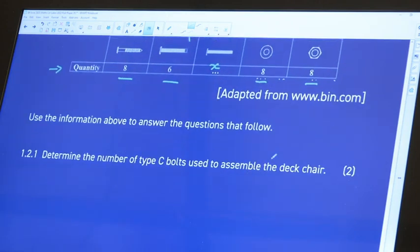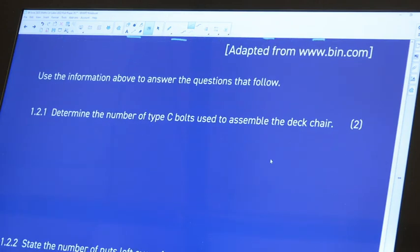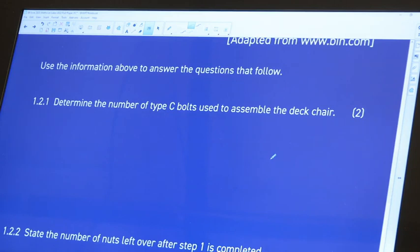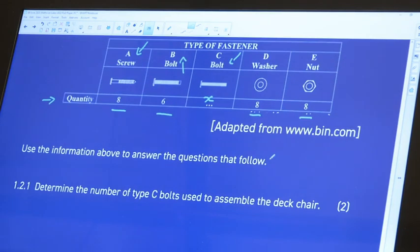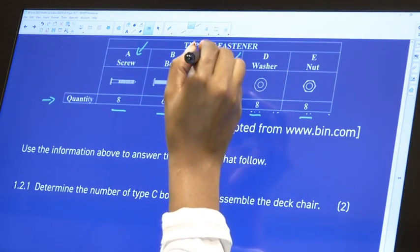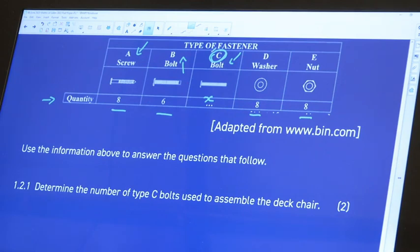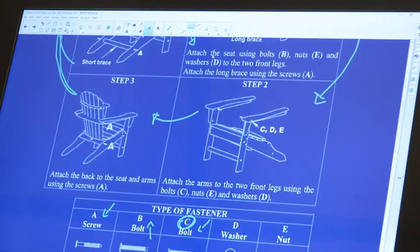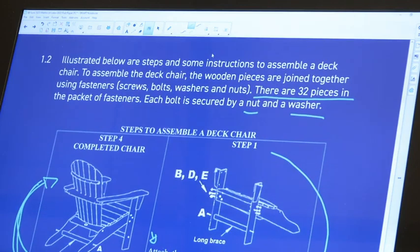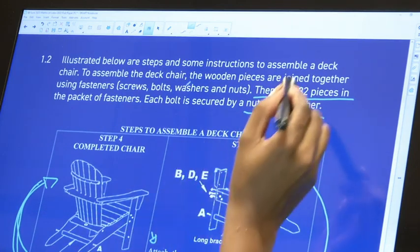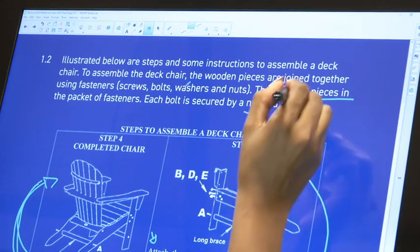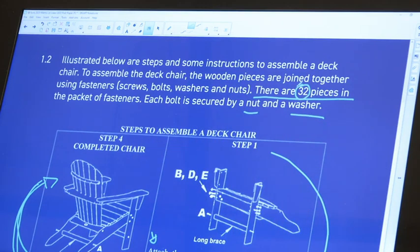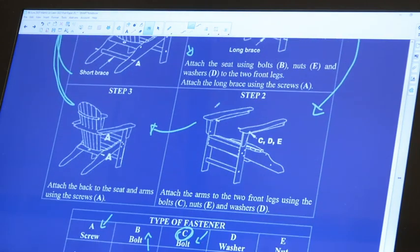So it says here that we need to determine the number of type C bolts used to assemble the deck. Can you see already, type C is this one that I was talking about. We are given the total which makes it really easy. So the total that we are given according to this is that we've got 32 in total.